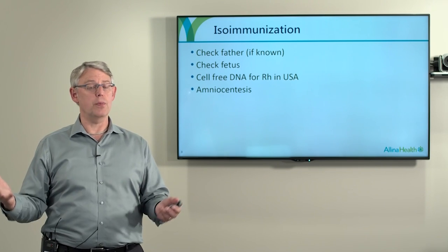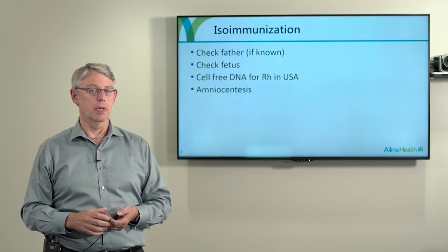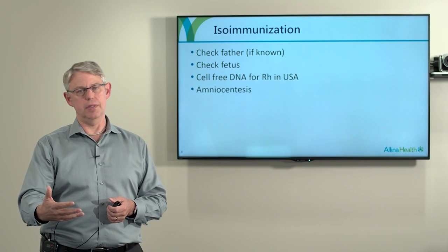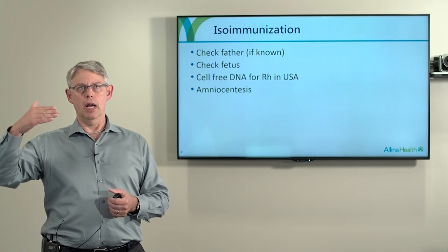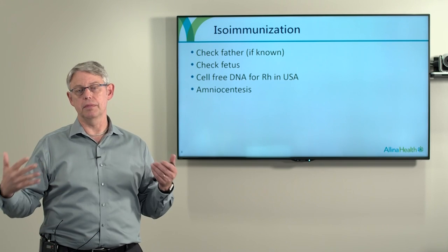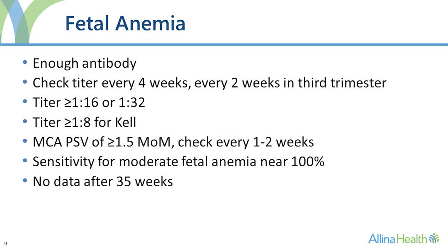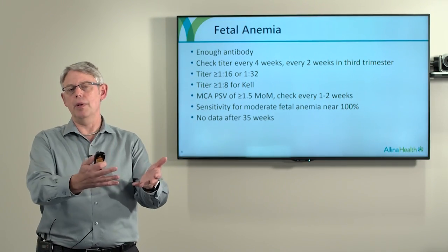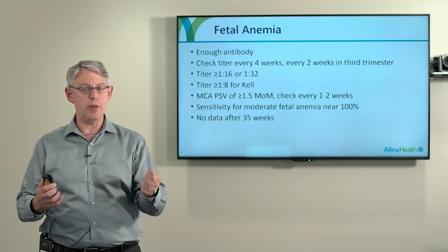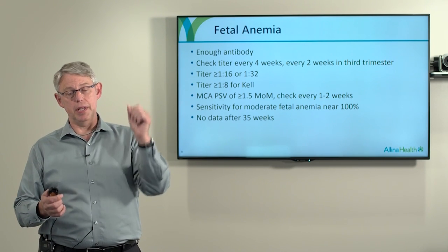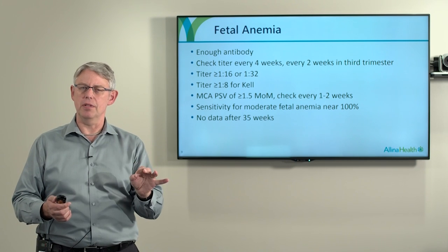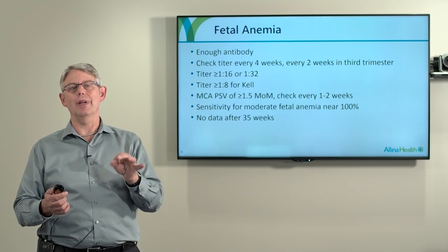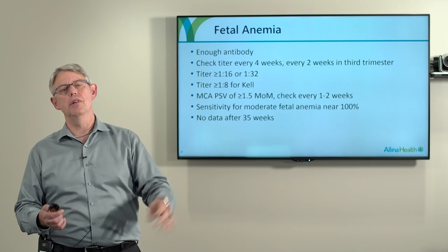The other way to check fetal antigen status is the old-fashioned way — amniocentesis. We are not using amniocentesis as much as we used to, because there are other less invasive ways of figuring out if the fetus is anemic or not. The concern about isoimmunization is that it may cause fetal anemia. While we could directly sample fetal blood by putting a needle into the cord, that's fairly invasive and most of the time we don't need to do that. So we look for other indirect ways of assessing the likelihood for fetal anemia.